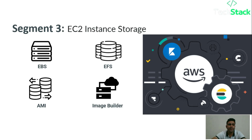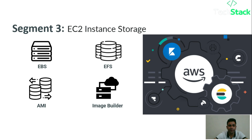The third segment is related to EC2 instance storage. First we have EBS volumes, then EFS, then AMIs, and the fourth one is AWS Image Builder. Let's start with the first one.